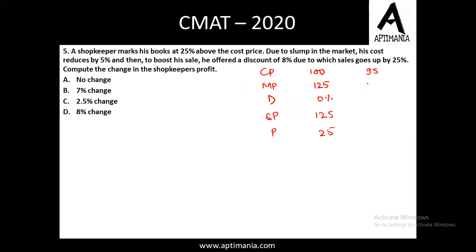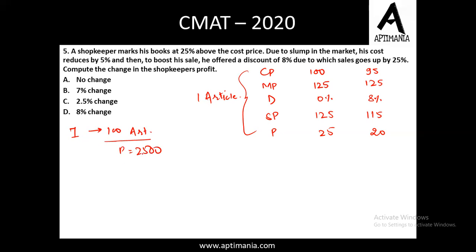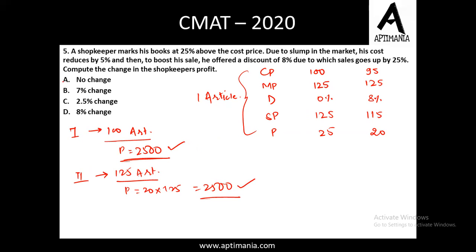The marked price is again 125, but now he's offering a discount of 8%, so selling price will be 115 after reduction of 8% from 125. Profit per article is 20 rupees. But his sales go up by 25%. Assuming total sale was 100 articles in the first case, total profit was 2500. In the second case sales go up by 25%, so he's selling 125 articles, and profit is 20 × 125 = 2500 again. There is no change in the shopkeeper's profit. So option A, no change, is the correct answer for question number 5.